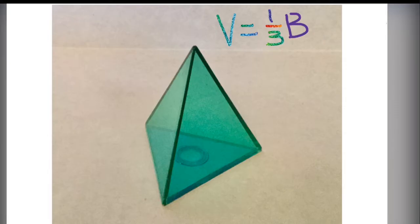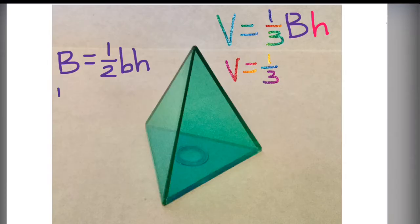So let's give it a try. Volume equals one third big B times H. Remembering our most important part is that big B. So let's go ahead and look at the base. The base is a triangle. What is that formula? One half BH.